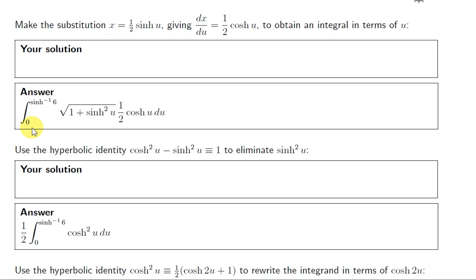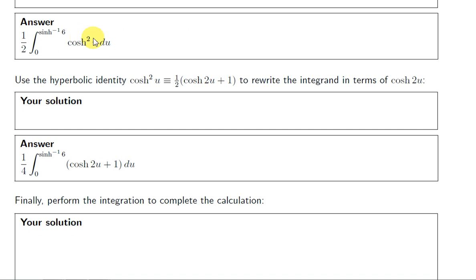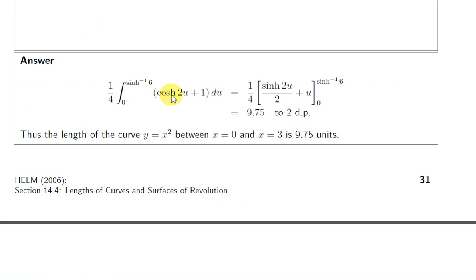Similarly to integrating trigonometric cos squared, we write hyperbolic cos squared in the linear form using the identity. Taking out the factor of one quarter, we integrate: the integral of hyperbolic cos is hyperbolic sin, and we divide by the coefficient of u, which is 2, so that differentiation by the chain rule gives back hyperbolic cos. Integrating 1 with respect to u gives u. We then plug in the limits and calculate to get the final answer.